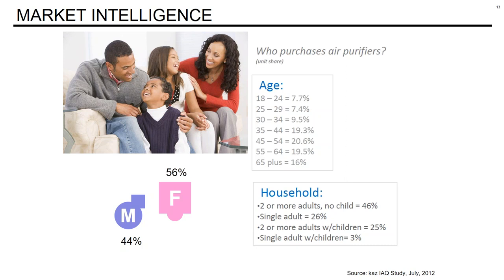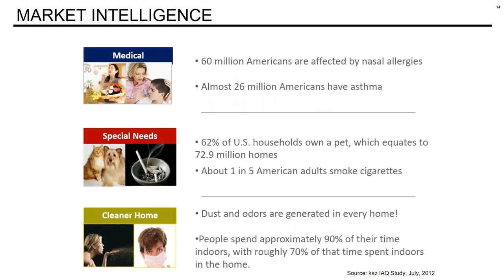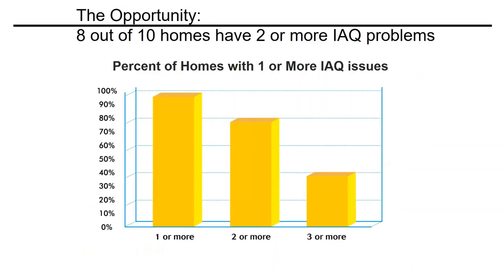More than half of homeowners will buy air quality solutions right now. There are lots of people with allergies and asthma — trends that have been increasing for decades. Eight out of every ten homes have at least two indoor air quality problems, and about 41% have three issues that need to be addressed. Pretty much everybody is a target if you're offering solutions to these problems.